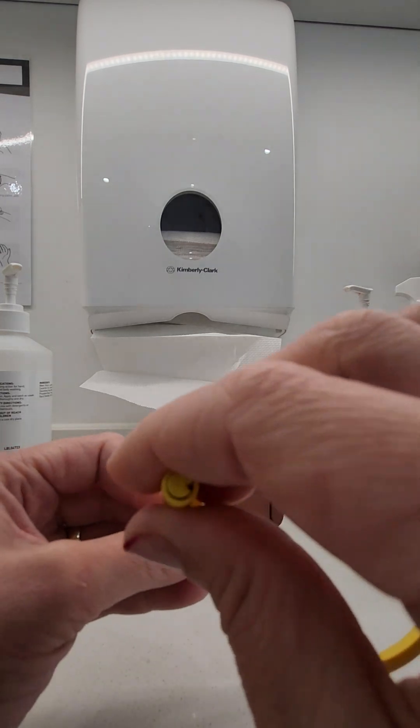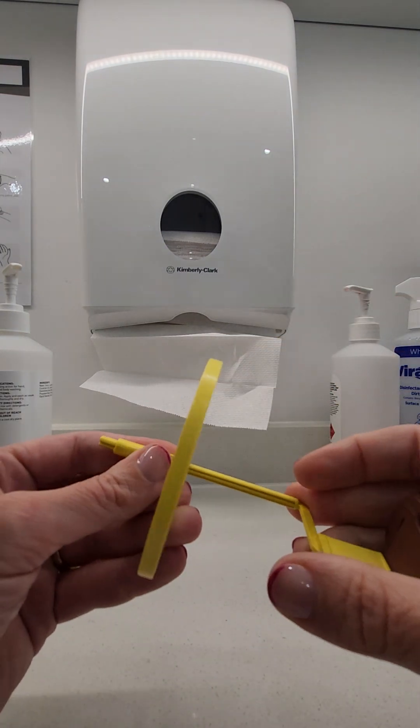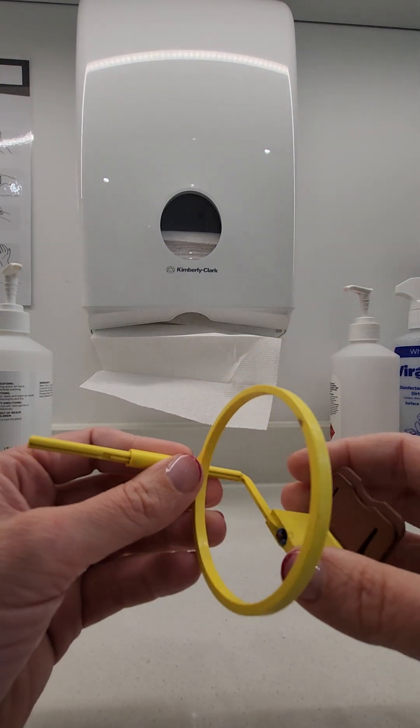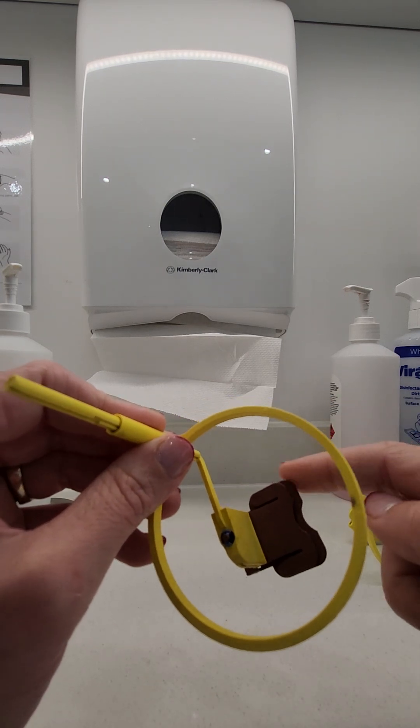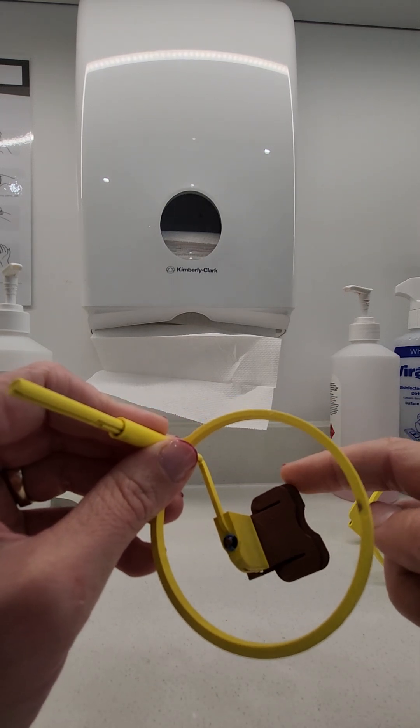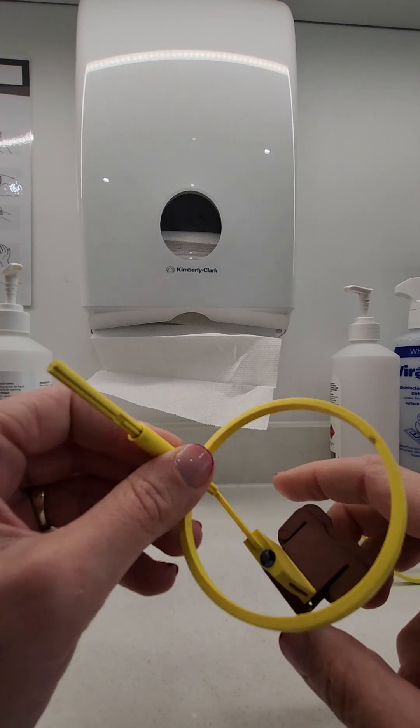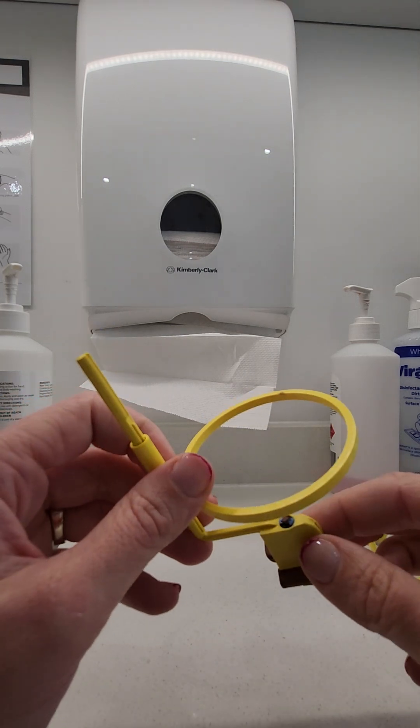So we just need to put it to the up position. The reason the PA holders have two positions is because this brown part also has two positions that we can move it into.